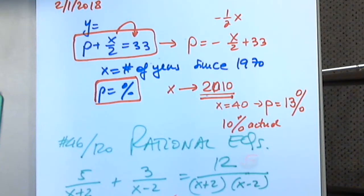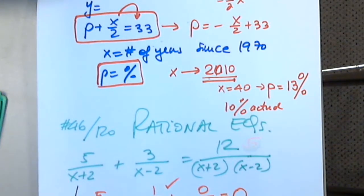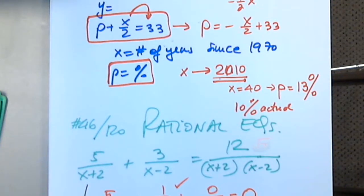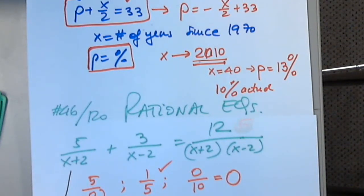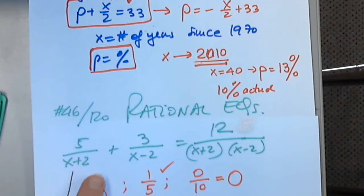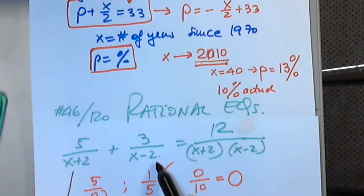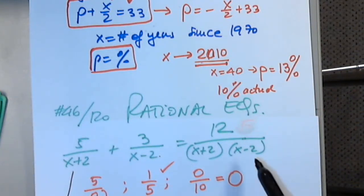My concern when solving rational equations is dividing by zero. In order for this fraction to exist, I have to write a restriction on x — x cannot be everything. For the denominator x plus 2, x cannot equal negative 2. For the denominator x minus 2, x cannot equal 2. These are restrictions on x.